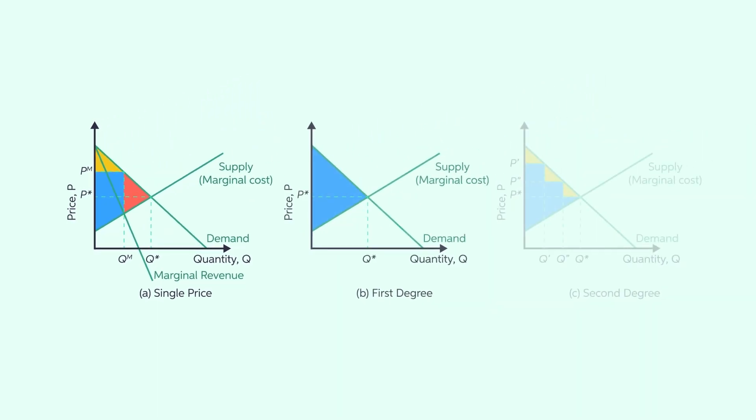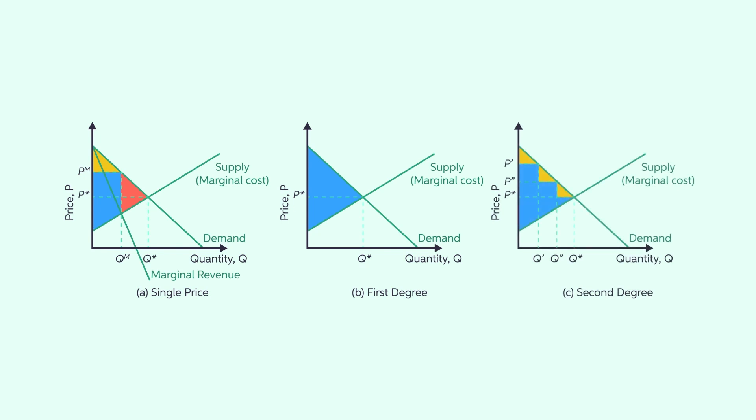The second and third graphs represent the surplus division in the first and second-degree price discrimination, respectively. Here, the deadweight loss has disappeared. By charging different prices, the monopolist can now expand production to a perfectly competitive level and make more profits at the same time.